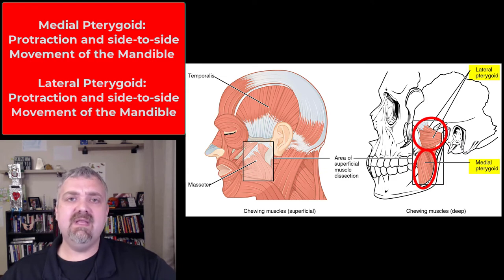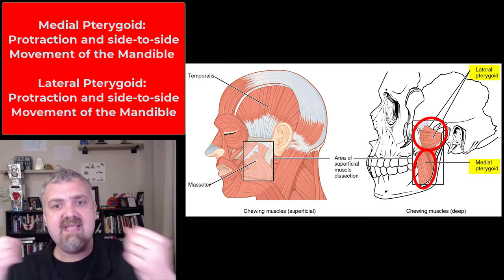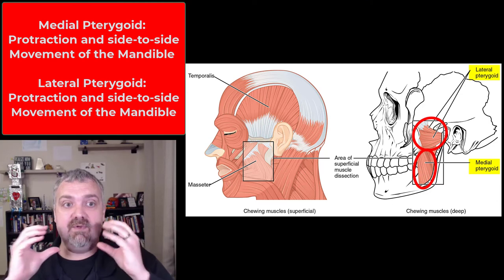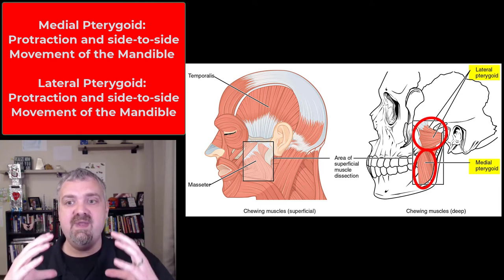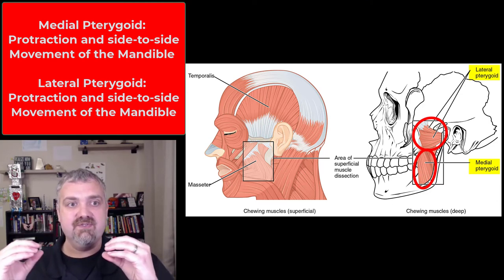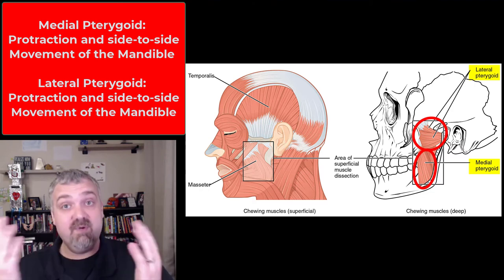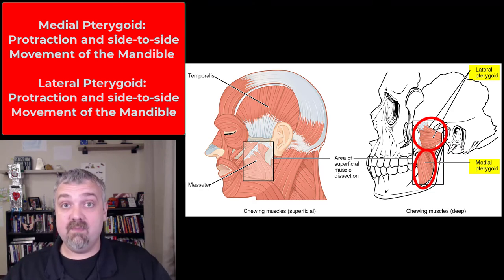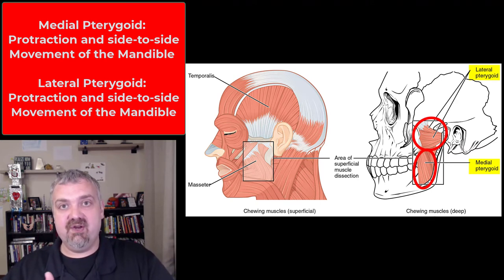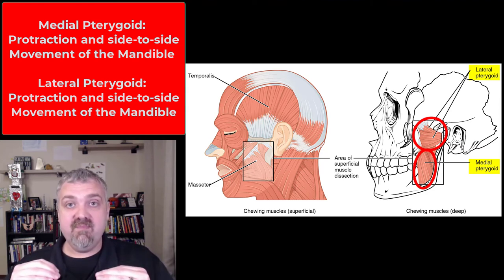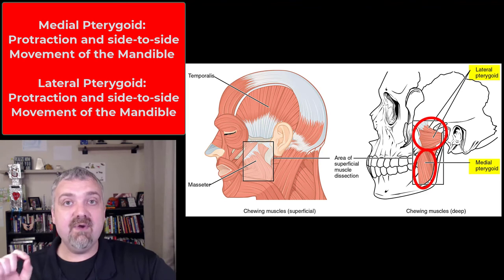I also want to talk about the medial and lateral pterygoids. These are deep muscles, way back in the mouth, attached to the sphenoid bone. Their job is primarily to protract the mandible — to jut the mandible out. When you're chewing, it isn't just elevation and depression; the mandible is also moving forward, backwards, and side to side. The pterygoids protract the mandible but also move it medially and laterally. Think about that grinding action that can occur as the mandible goes forward, backwards, and side to side — that forward and side-to-side movement is the pterygoid muscles.